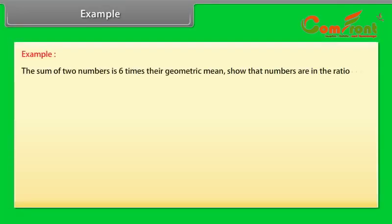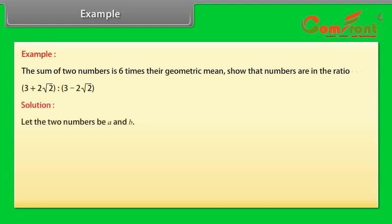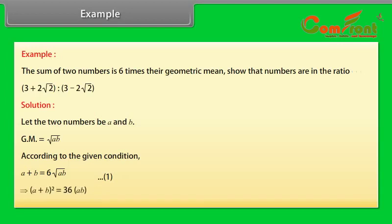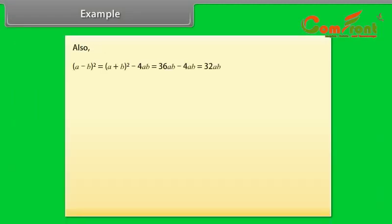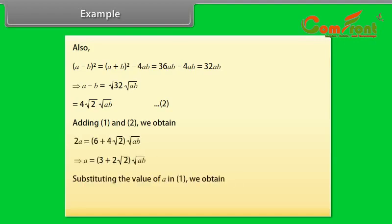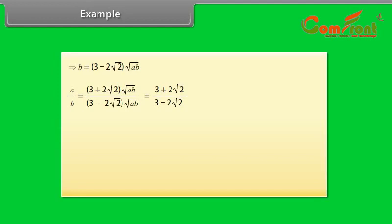Example: The sum of two numbers is 6 times their geometric mean. Show the numbers are in a specific ratio. Let the two numbers be a and b. Given: a + b = 6√(ab) — equation 1. Squaring gives (a+b)² = 36ab. Also (a−b)² can be derived, giving a−b = 4√2×√(ab) — equation 2. Adding equations 1 and 2, substituting back, we get a/b = (3 + 2√2) / (3 − 2√2).